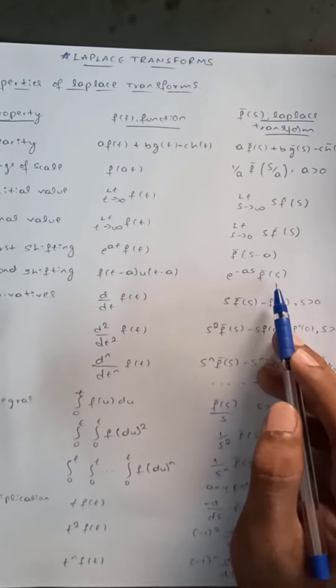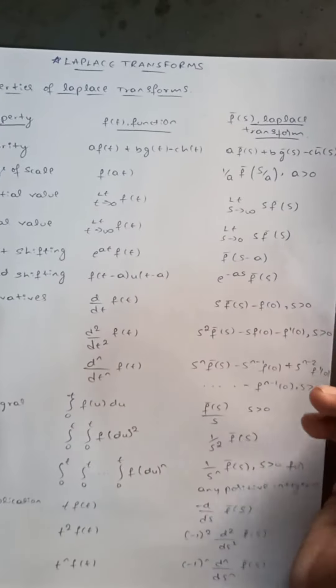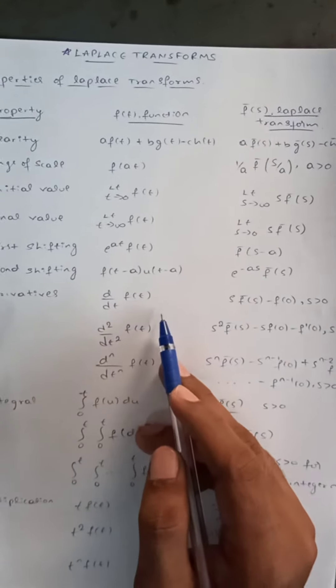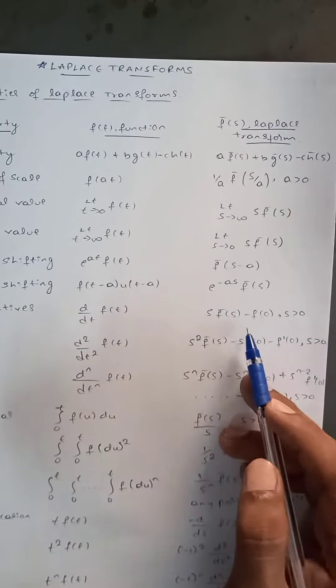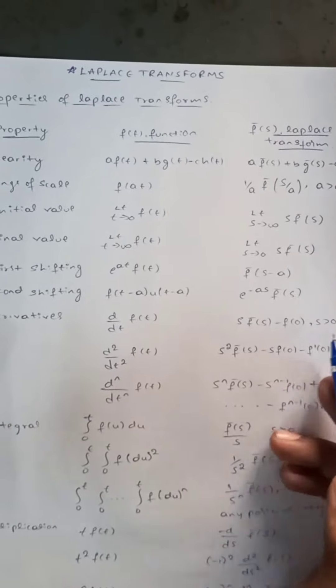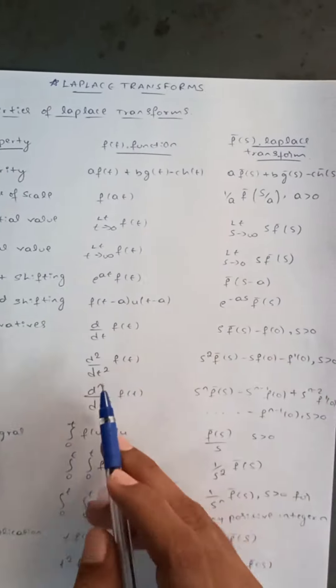For the derivatives property: the Laplace transform of f'(t) equals s·f̄(s) − f(0), where s is greater than zero.